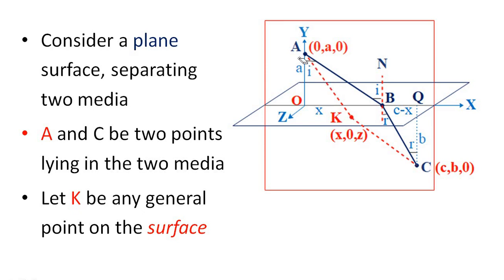We assume that light travels from A to K and then K to C. The coordinate of K is (x, 0, z), meaning it is in the xz-plane where y equals zero. So the general point K has coordinates x and z.